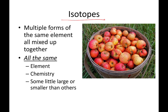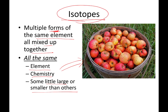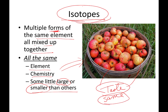Isotopes are multiple forms of the same element, all mixed up together. These different forms all have the same chemistry — they're all exactly the same element, but some are a little bit larger and some are a little bit smaller. I love this picture of a bushel of apples because it gives you a good visual of what isotopes are like. Some of these apples are a little bit larger, some a little bit smaller. They were picked off the same tree, probably taste exactly the same — they're the same apple, same genetic makeup, just slightly different sizes. That's what's going on with isotopes.